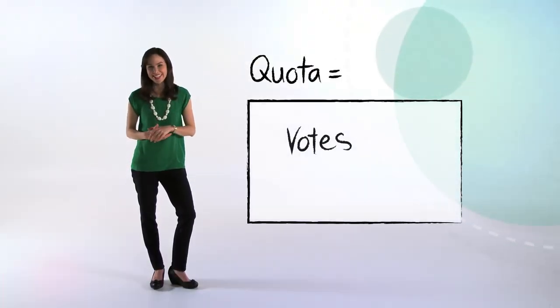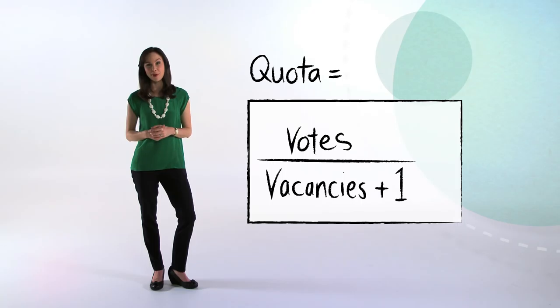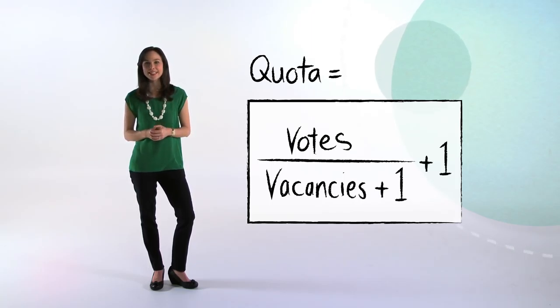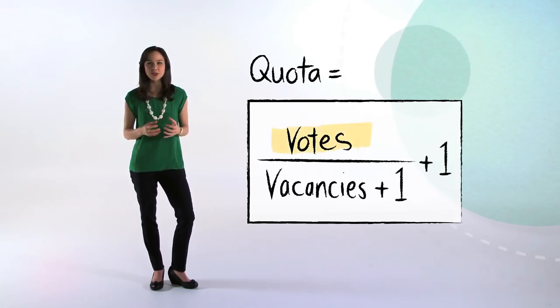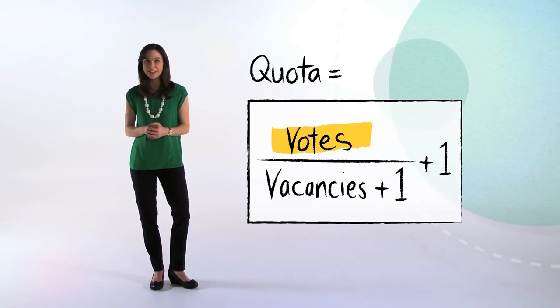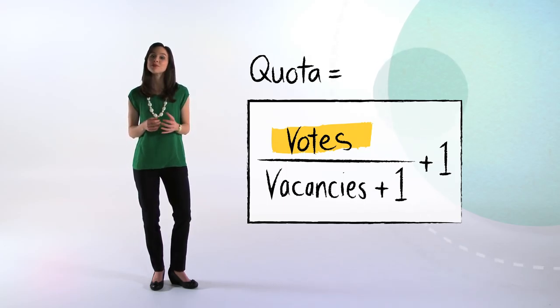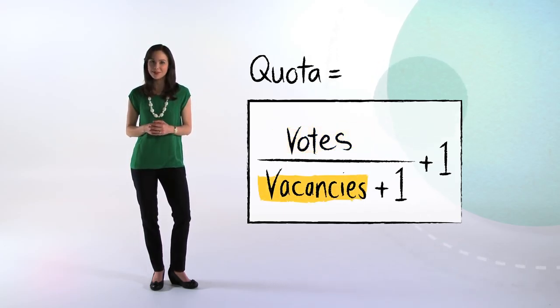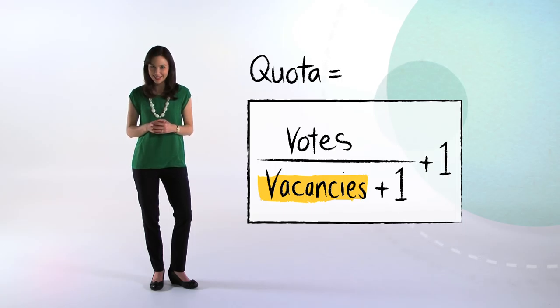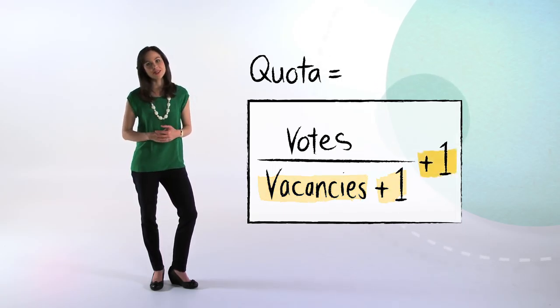Under the Hare-Clarke system, to be elected, a candidate has to receive enough votes to reach a quota. A quota is calculated using this formula: divide the total number of formal votes — meaning a vote that has been correctly cast — by the number of vacancies, that's the number of candidates to be elected, plus one. Then we add one to the total.